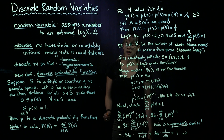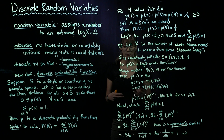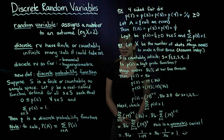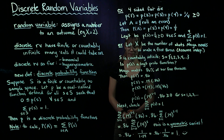One thing to note: if you have an event A and it's made up of a couple different elements in your sample space, then you can calculate the probability of that event by taking the probability of each element and summing them up.